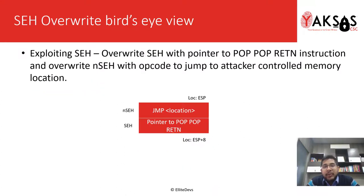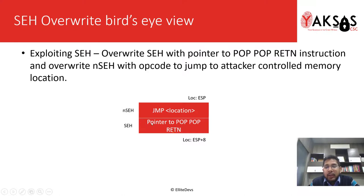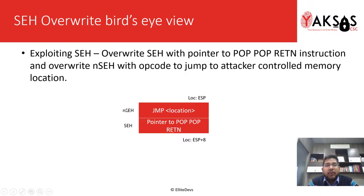So how do we exploit the SEH mechanism? We send the program an overly long string, and with that string we can overwrite the SEH pointer and the NSEH pointer. We overwrite the SEH pointer with a pointer to pop-pop-return instructions, which decreases the stack by 8 bytes so that ESP points to the NSEH. On the NSEH we write the opcode to jump to a location we control, and at that memory location we place shellcode to obtain a shell on the target machine. That was the bird's eye view of SEH overwrite.